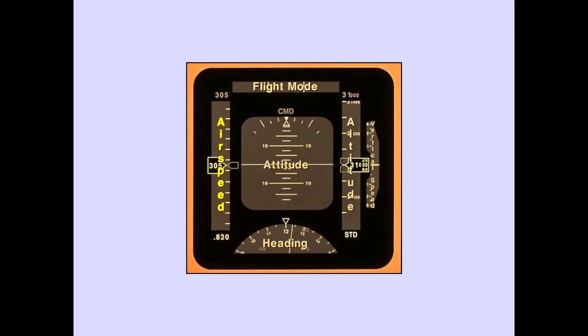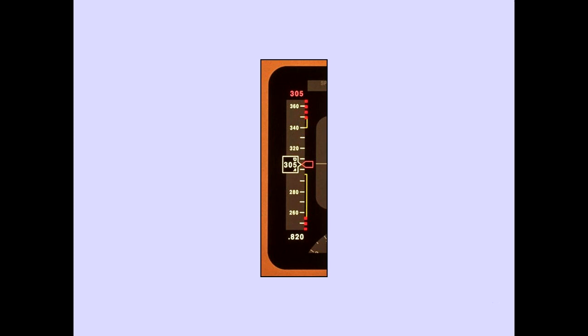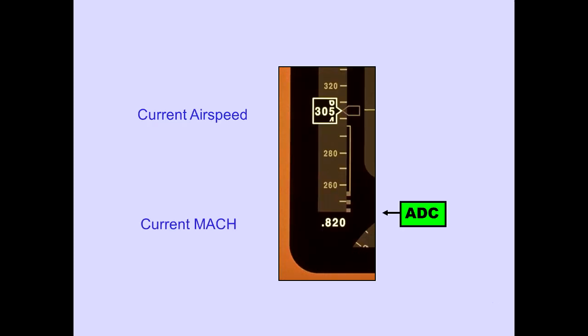Let's first look at the airspeed indication. The airspeed tape is located on the left of the PFD. The moving tape displays current airspeed, airspeed limits, and recommended speeds. Current airspeed is always displayed in the box at the center of the airspeed tape. The current Mach is displayed below the airspeed tape. The selected air data computer provides this information.